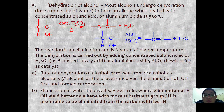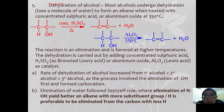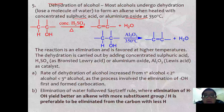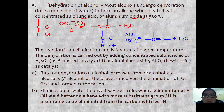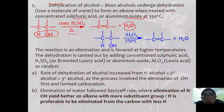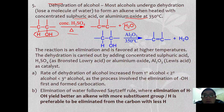Most alcohols undergo dehydration — losing a water molecule to form an alkene — when heated with concentrated sulfuric acid or aluminum oxide at 350 degrees Celsius. This is the general equation for the reaction where water is removed as a side product and you form an unsaturated C double bond C. The same reaction can be observed if you use aluminum oxide as your catalyst.